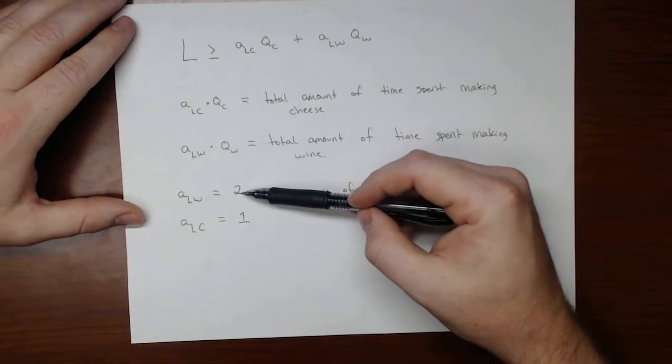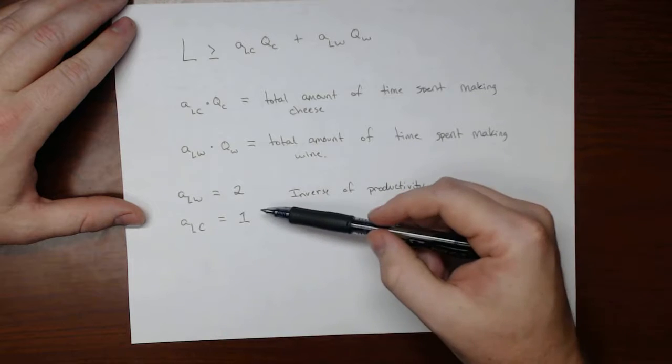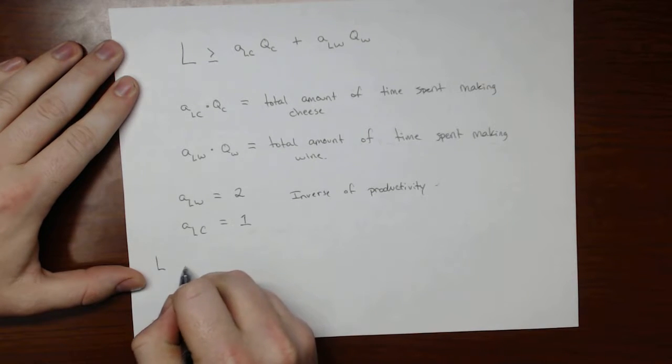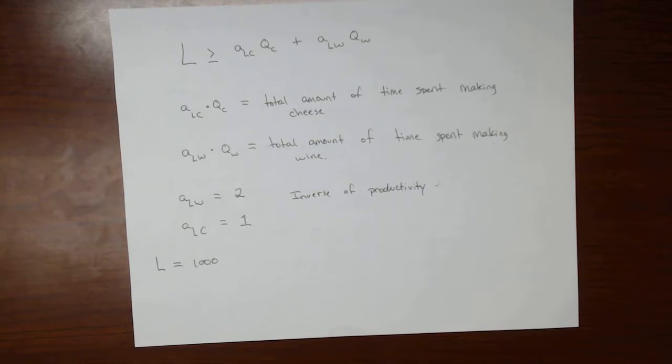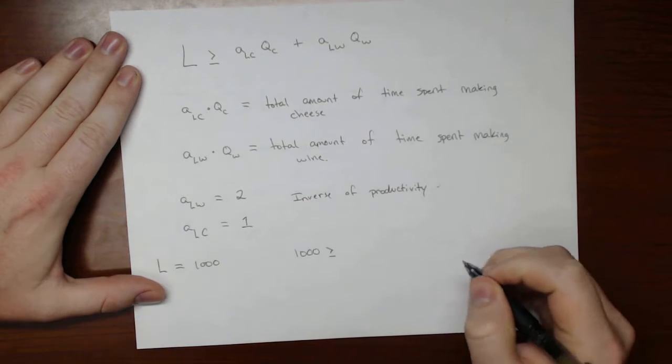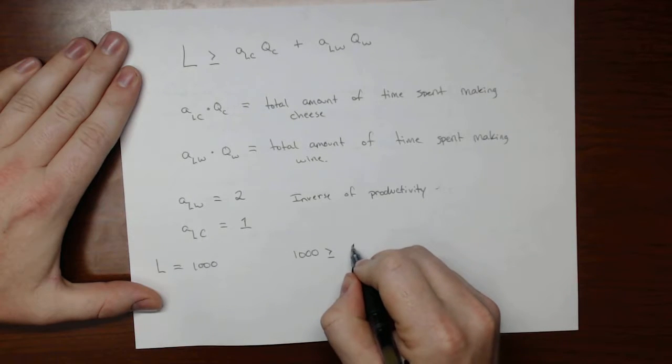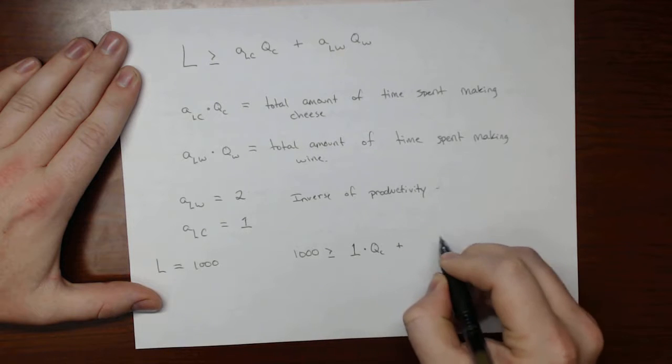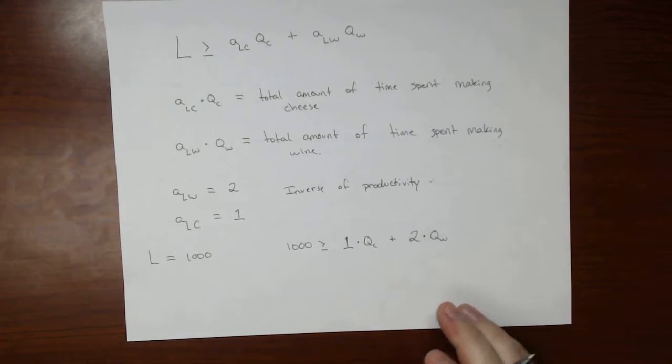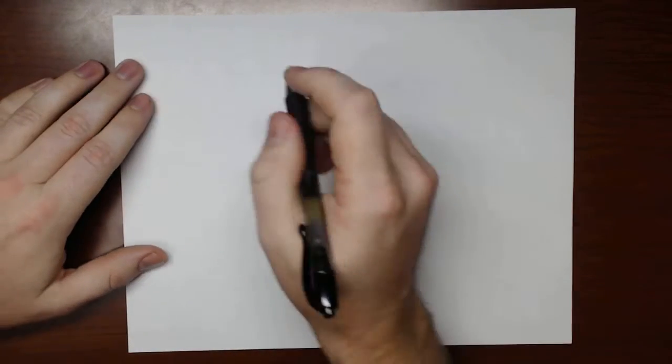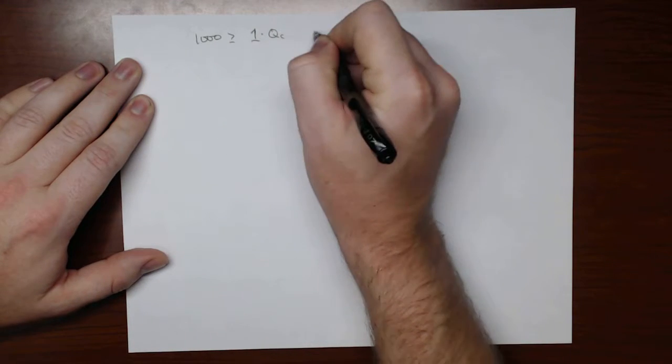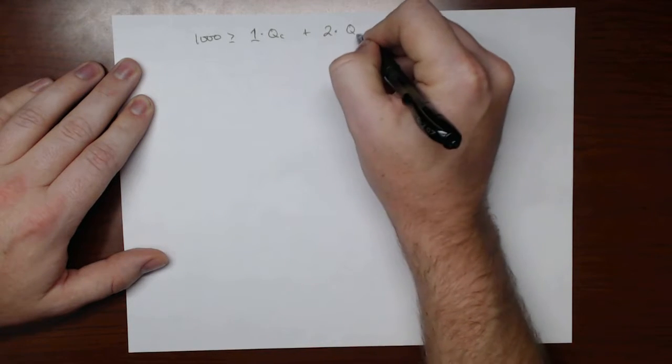Which means that if they go up, that means people became less productive, and if they go down, then people became more productive. And let's say that this country has a total of 1,000 hours that they can spend. So what we know is that 1,000 must be less than or equal to 1 times QC plus 2 times QW. So let me grab another sheet of paper. And we have again, 1,000 greater than or equal to 1 QC plus 2 QW.